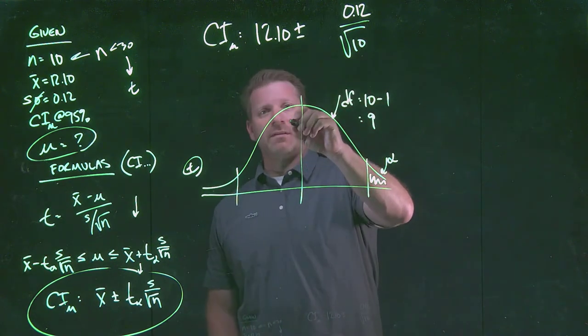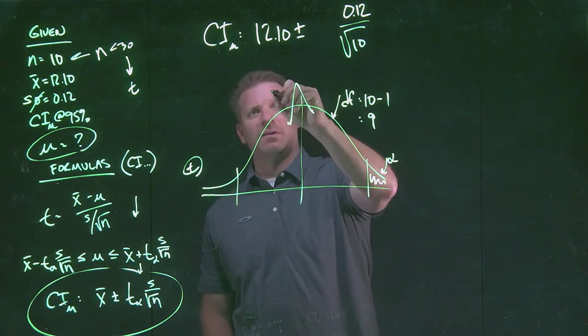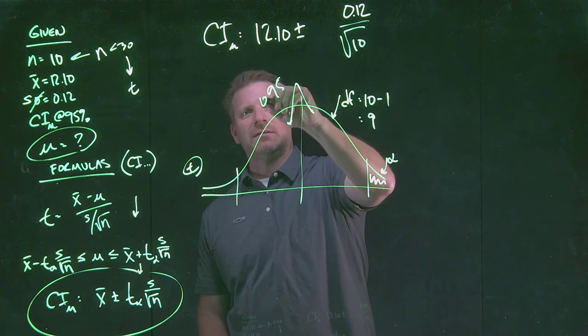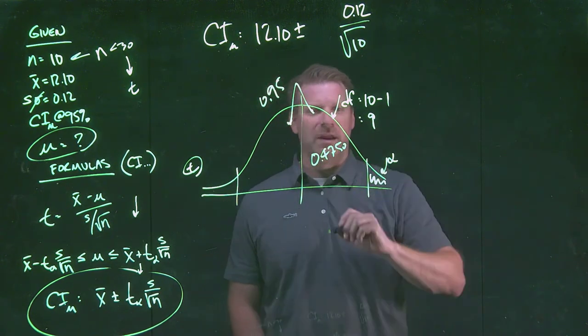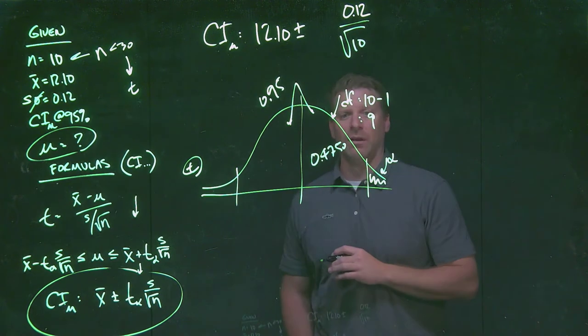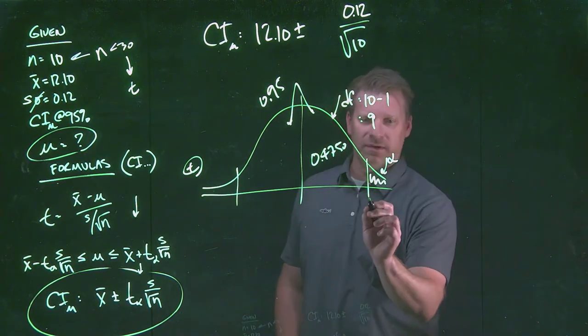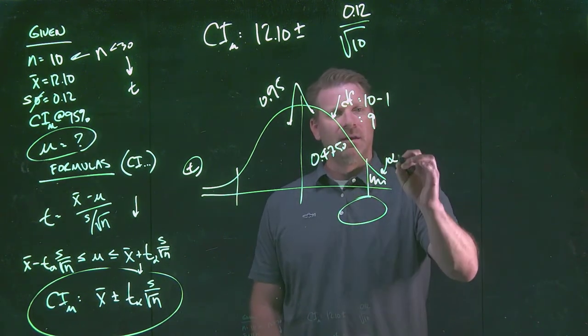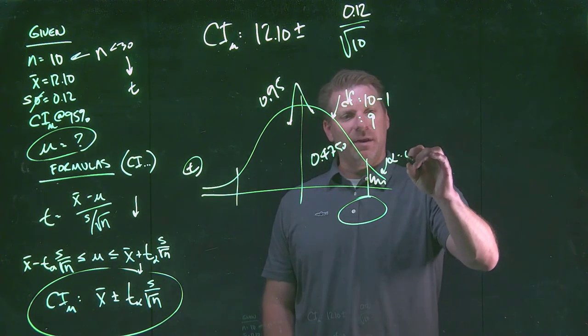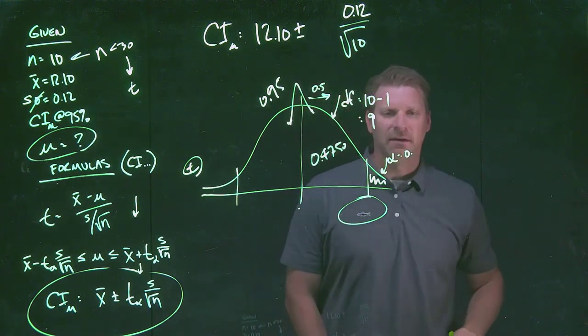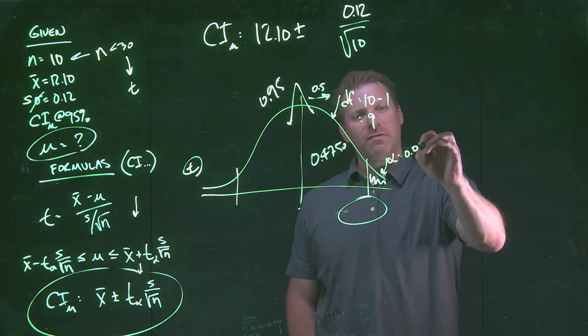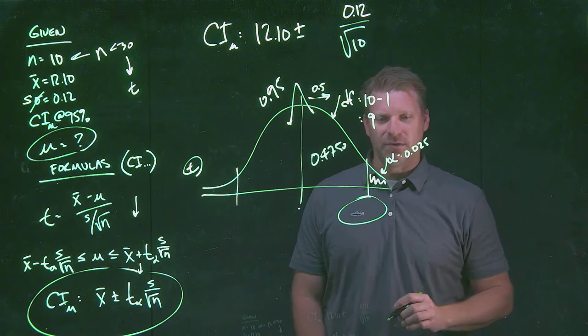Now we know we're keeping the same confidence interval assumption here at 95%. So we've got 47.5%, or the area underneath this T distribution is 0.4750 over to this value that we're looking for. That means that our alpha that we have, because we have half of that distribution on this side of the mean, we've got 0.025 or 2.5% left over there.